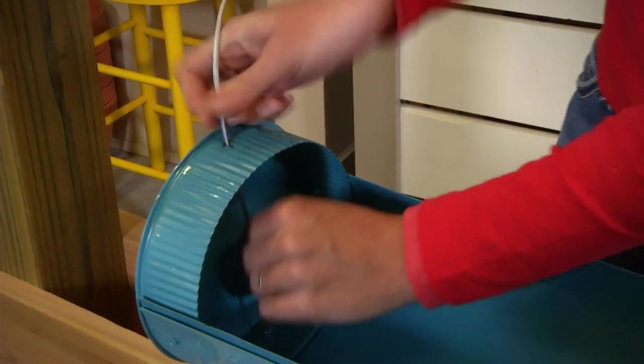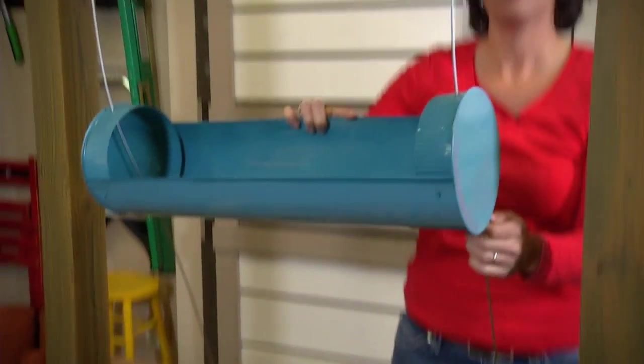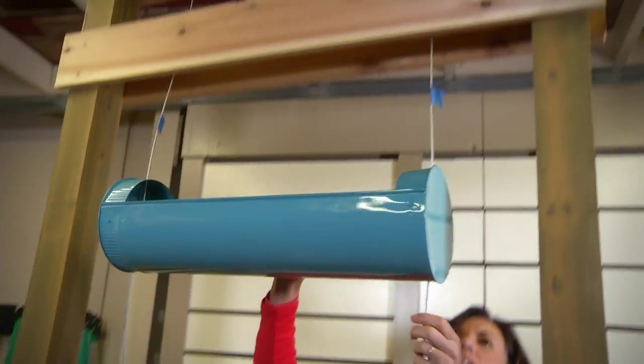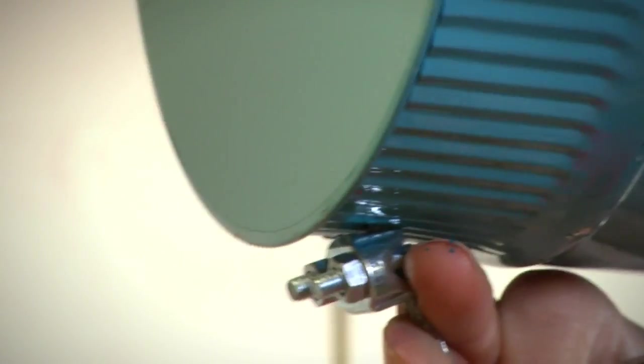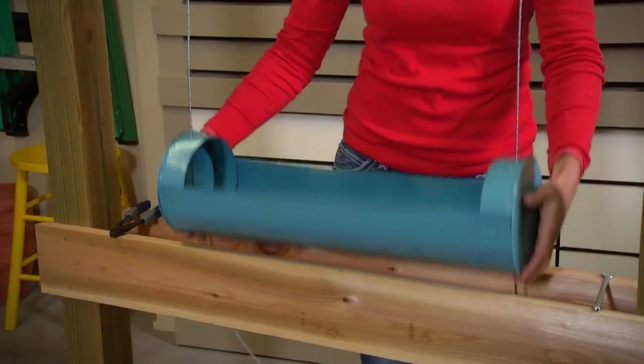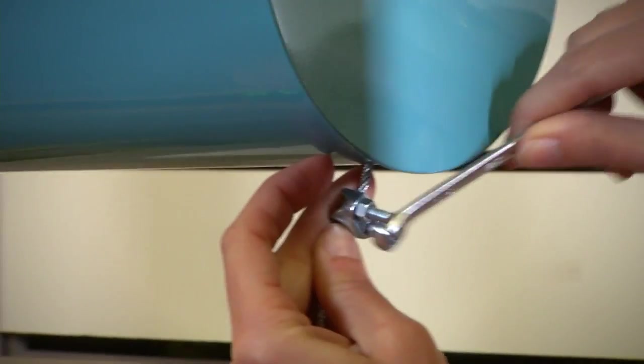Then go ahead and thread the wire through the holes and shimmy your planter up into place. Use a couple more of these wire clips to secure them. Then repeat the whole process for the remaining two planters.